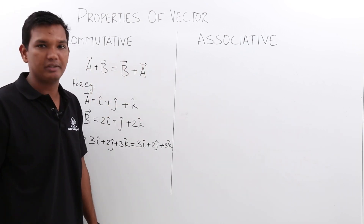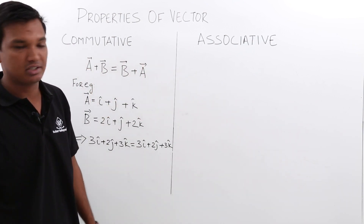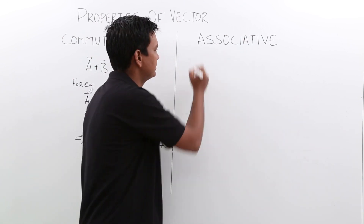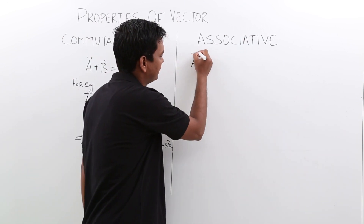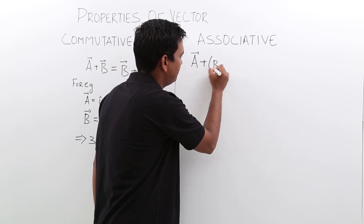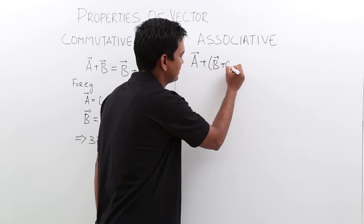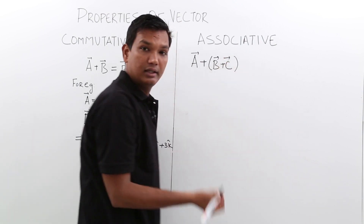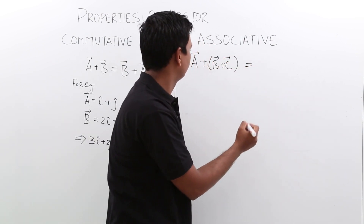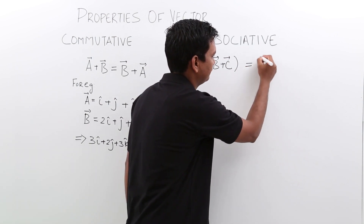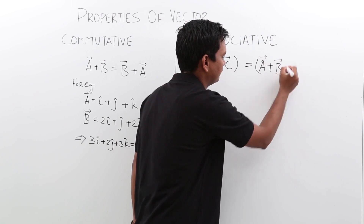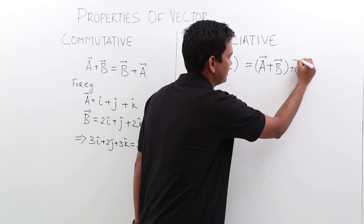Let us move on to the associative property. The associative property says A vector plus B vector plus C vector is equal to A vector plus B vector plus C vector, where the grouping of addition changes.